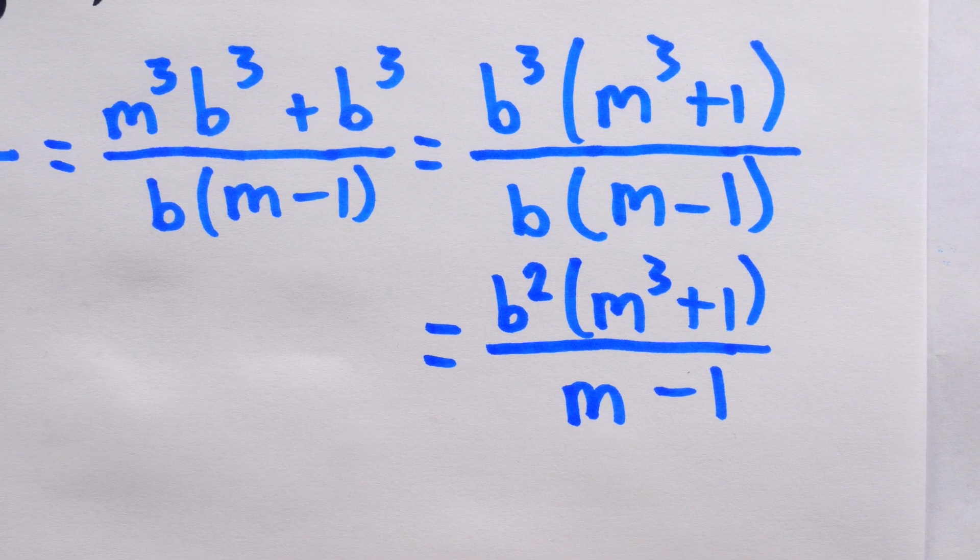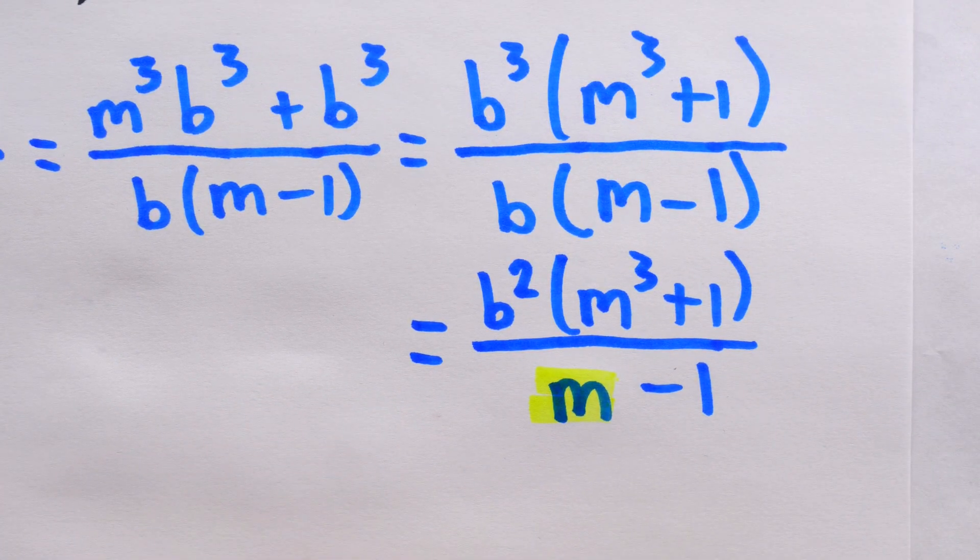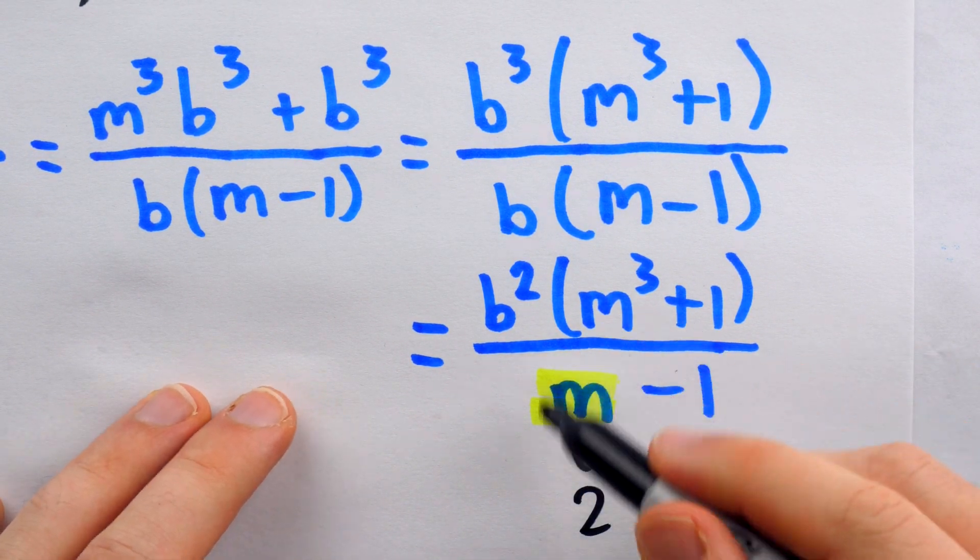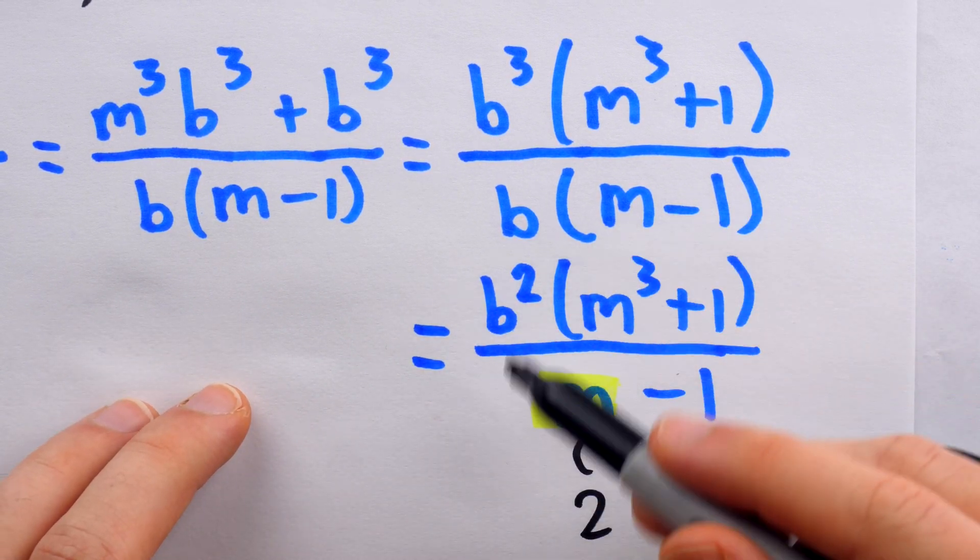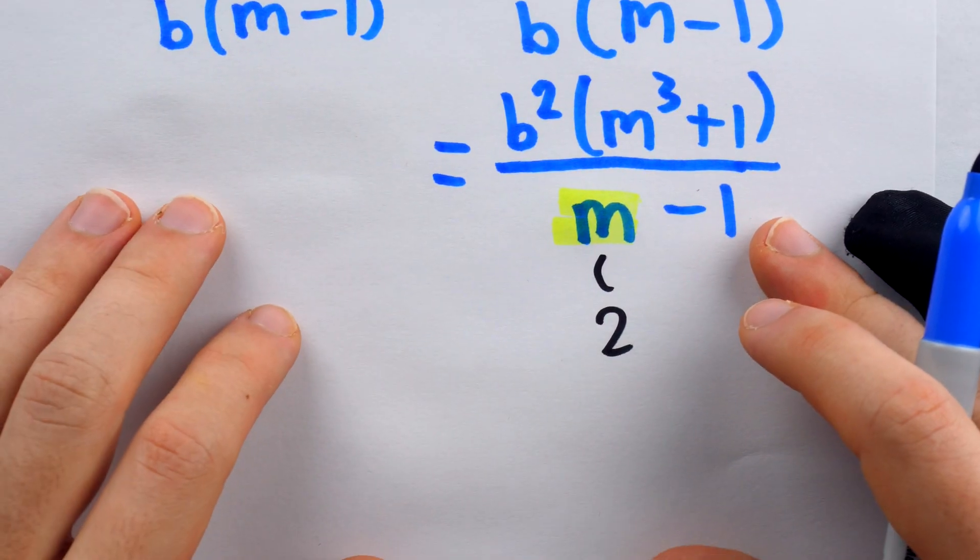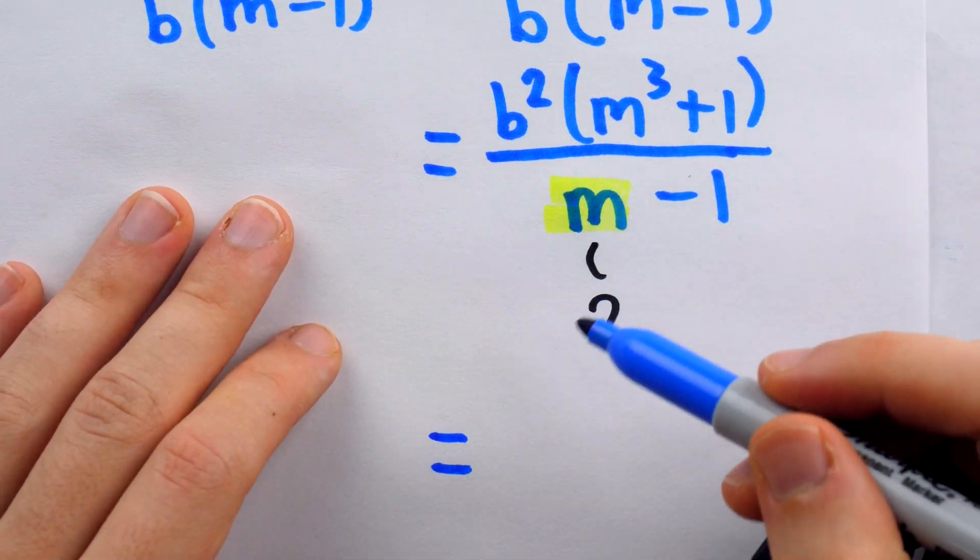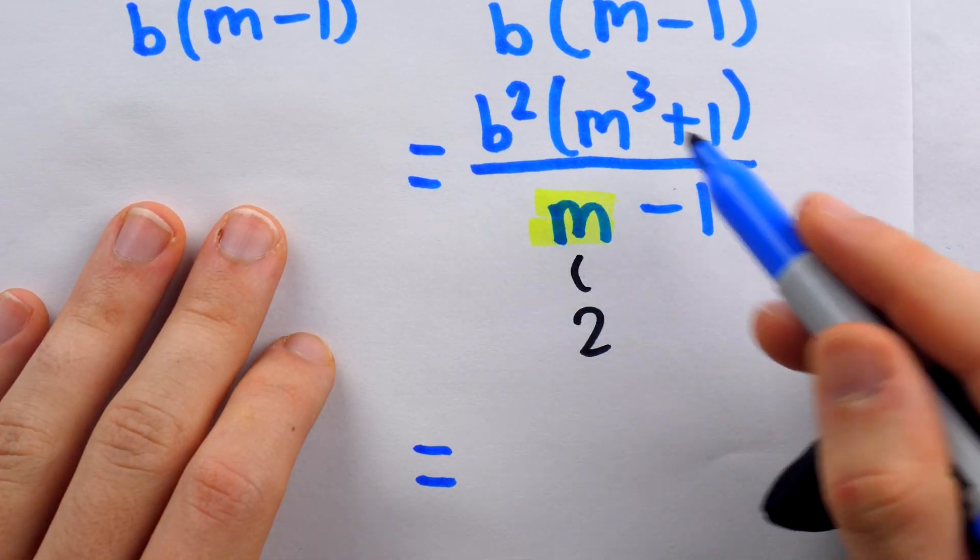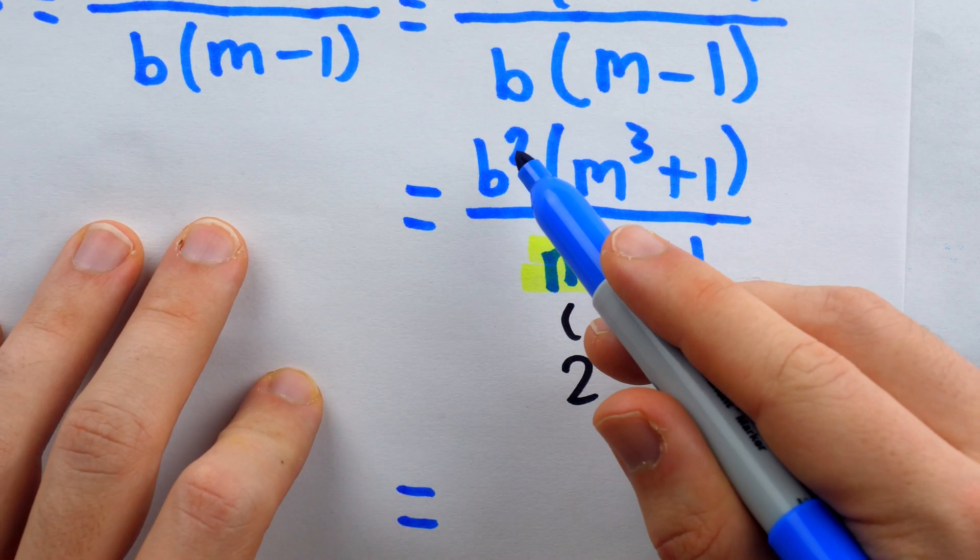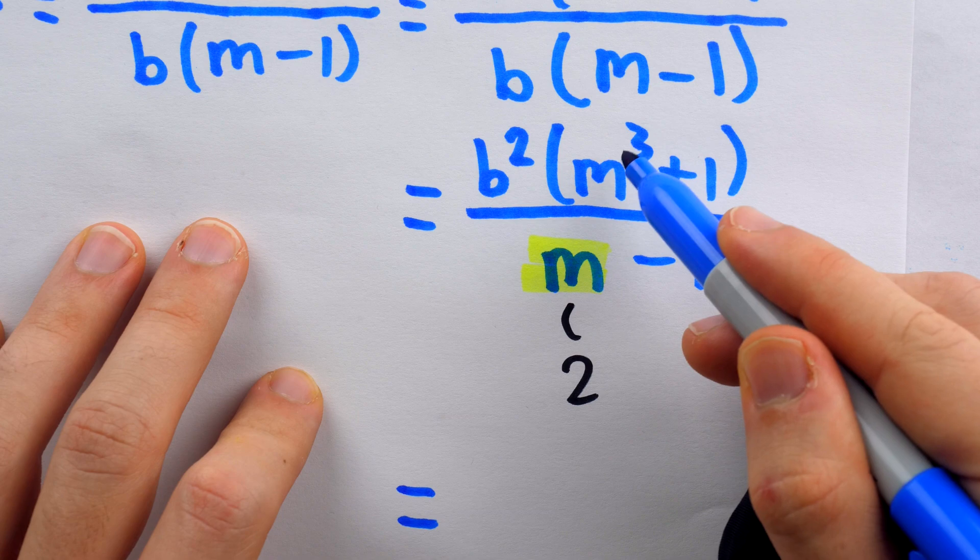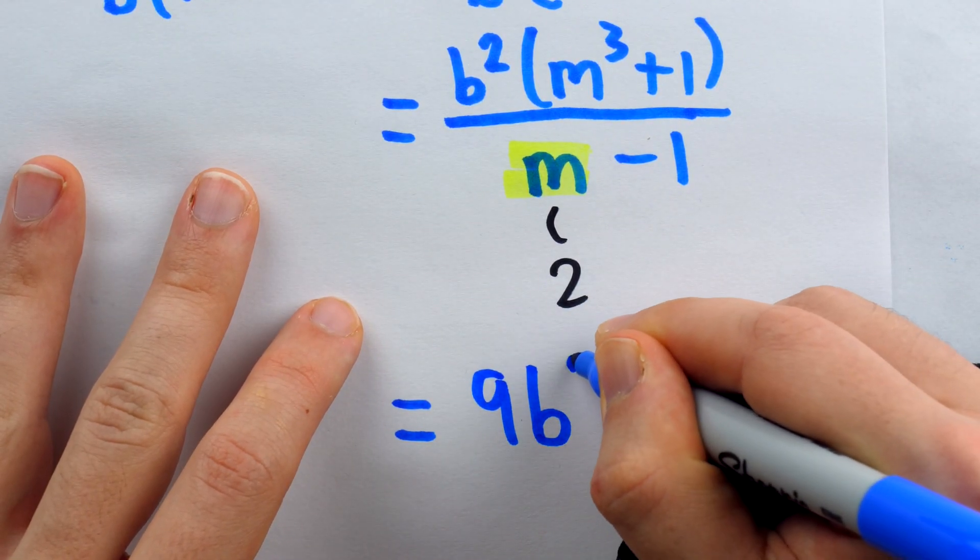So then what's the obvious choice for m? I think clearly the obvious choice is to try m equals two. That way, the denominator is guaranteed to be one. And this expression will always be an integer. Of course, being an integer is important because it can't be a square at all if it's not an integer. But let's see how this relates to the squares. If m is equal to two, then this denominator is one and we don't have to write it. And what will be left is b² times (2³ + 1). 2³ is eight. Eight plus one is nine.